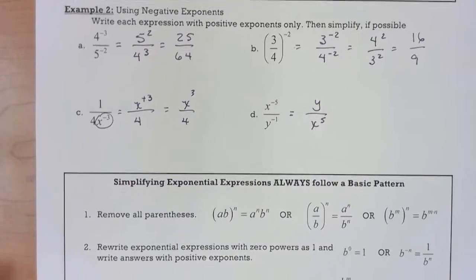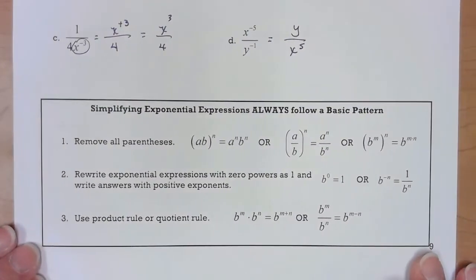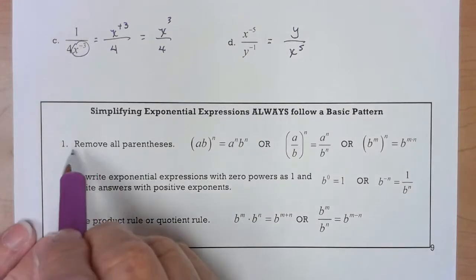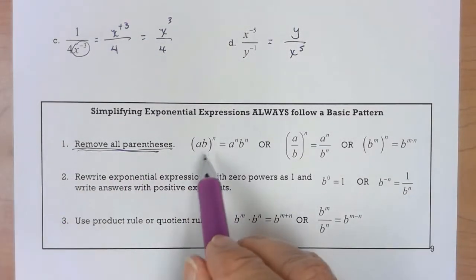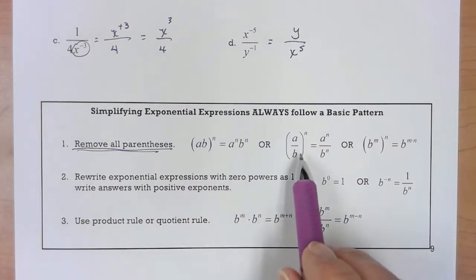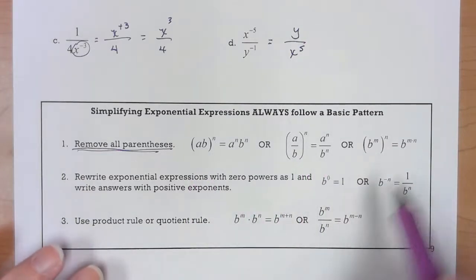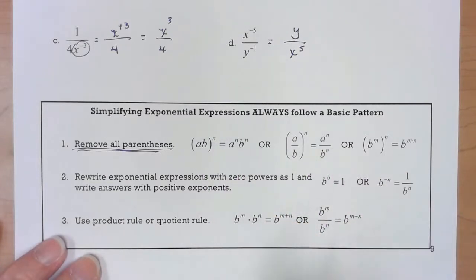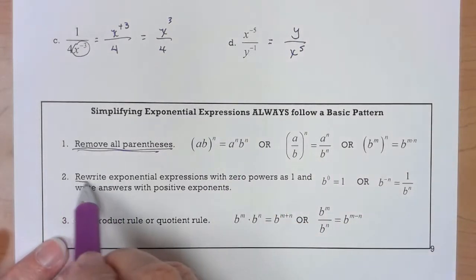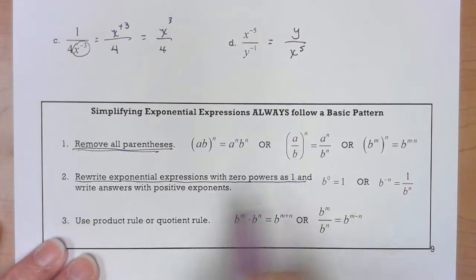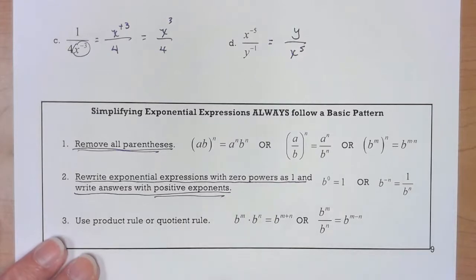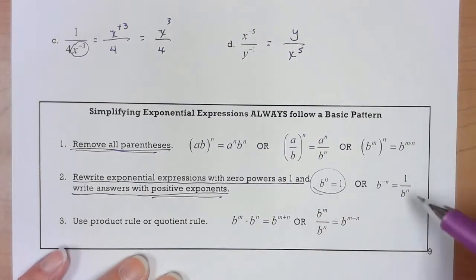Now there's going to be a lot of problems on the next page and I want you to get these steps down. This is the easiest way to go about fighting problems that have negative exponents, that have parentheses, and you have to simplify them. First thing you do is remove all parentheses, so either use your power rule or the quotient rule when it's raised to a power. Remember the exponents are just distributed through. Rewrite exponential expressions with zero powers as one and write answers with positive exponents. So you got to change this and then if you see any negative exponents make them positive.